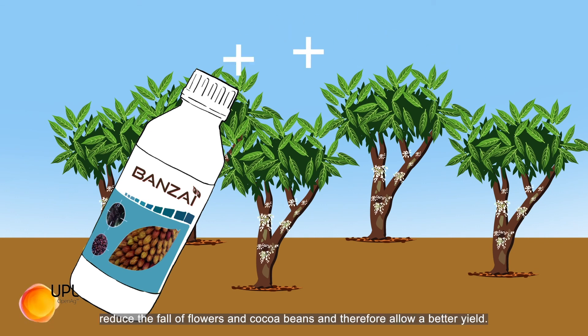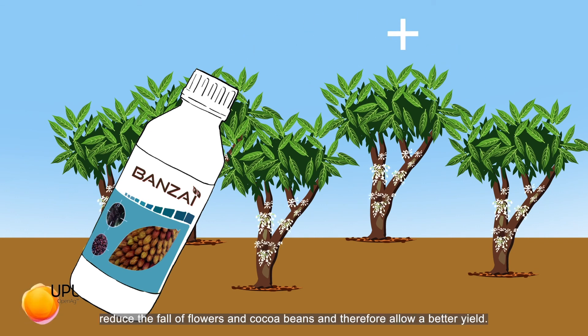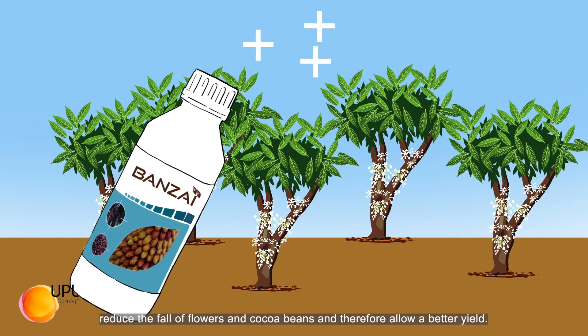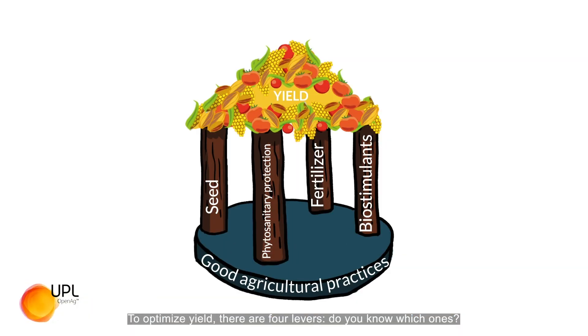As a biostimulant example, we can mention Banzai, which when applied to the cocoa tree will stimulate flowering, reduce the fall of flowers and cocoa beans, and therefore allow for better yield.